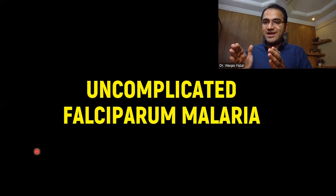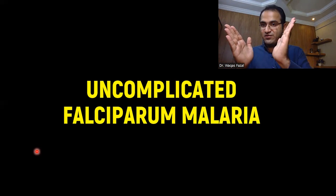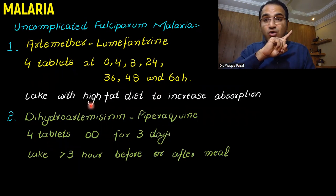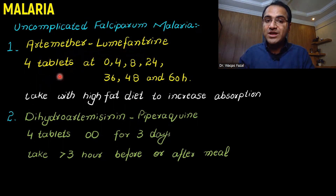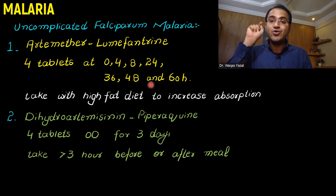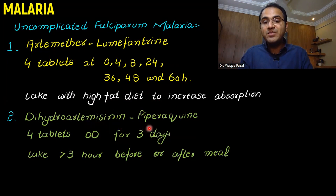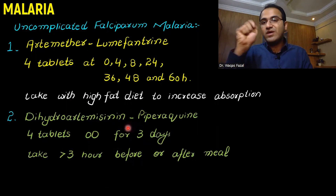The treatment of falciparum malaria is divided into uncomplicated and complicated categories. For uncomplicated falciparum malaria, chloroquine will not work and you must use other drugs. You can use artemether with lumefantrine — four tablets at 0, 4, 8, 24, 36, 48, and 60 hours — taken with a high-fat diet to increase absorption. Another option is dihydroartemisinin with piperaquine, four tablets once daily for three days, taken three hours before or after a meal.